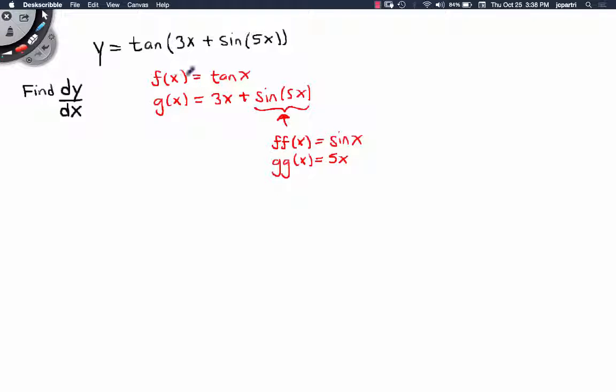So the chain rule would look like this. It would become f'(g(x)) times g'(x). So let's start with that.